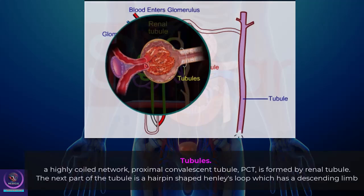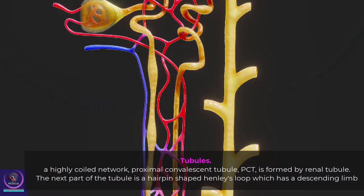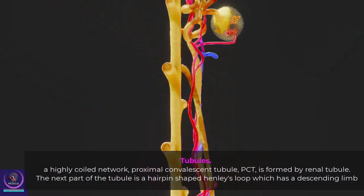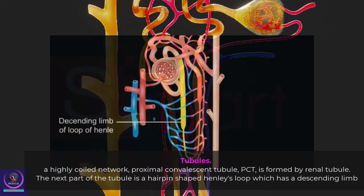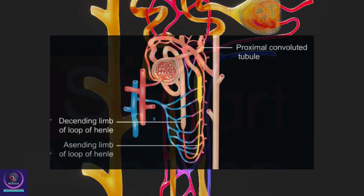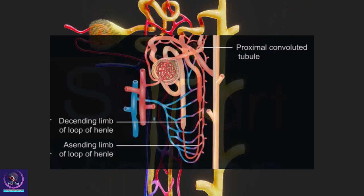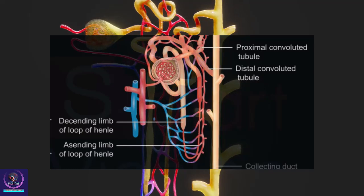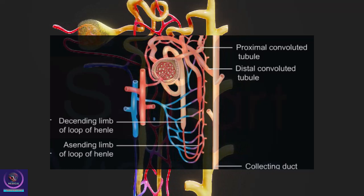The renal tubule forms a highly coiled network called the proximal convoluted tubule (PCT). The next part of the tubule is a hairpin-shaped Henle's loop, which has a descending limb that is a continuation of the PCT, and an ascending limb which leads to a highly coiled tubular region called the distal convoluted tubule (DCT).